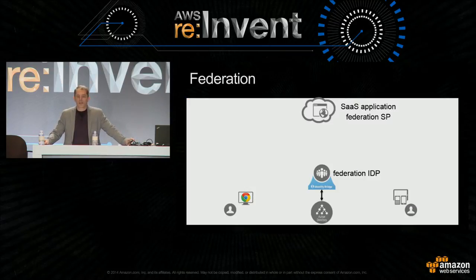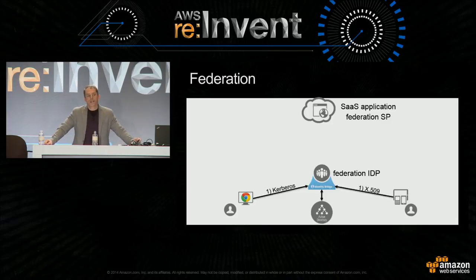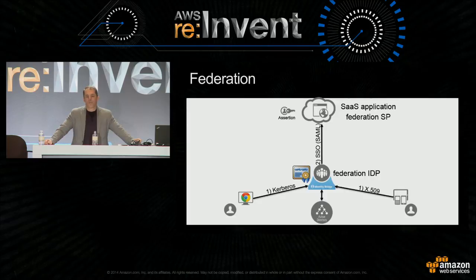Some level-setting on federation, because it's important when we start talking about integrating with IAM. You've got two components: the federated identity provider, whose job is to authenticate users and issue a SAML credential—security assertion markup language—digitally signed by a certificate, with the goal of giving single sign-on access out to a SaaS application. We call that SaaS application a service provider. Its job is to take that SAML assertion and transition to a local credential type—a certificate-based signature of that XML document called a SAML assertion.